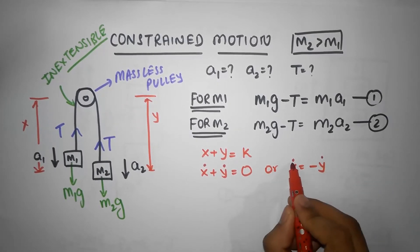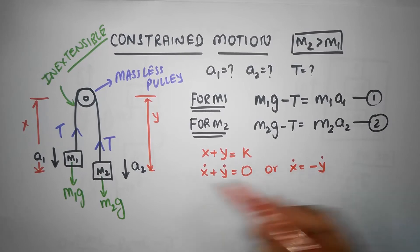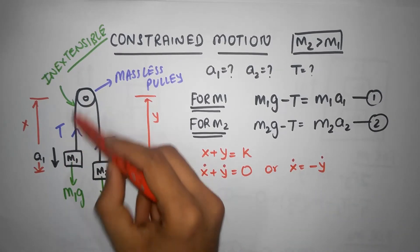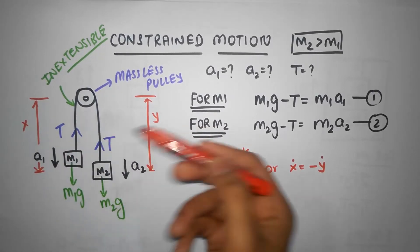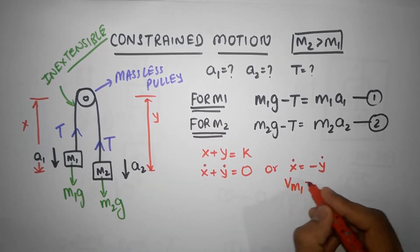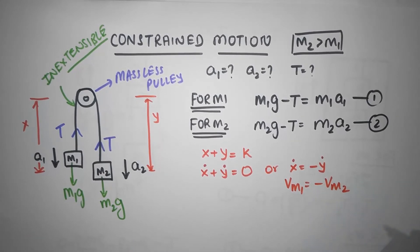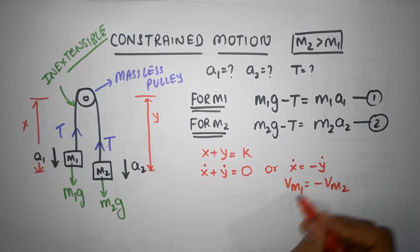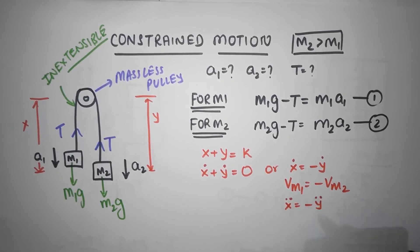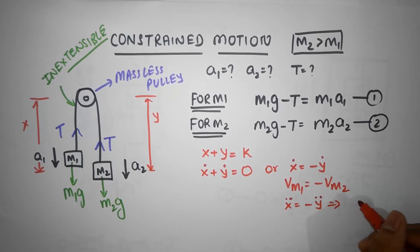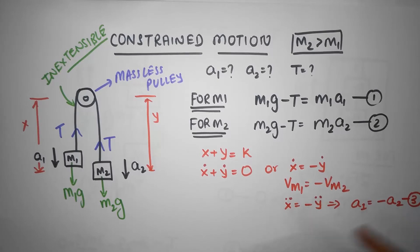x dot is the rate of change of position which is velocity of x. Velocity of this string must be in the opposite direction of the velocity of this string. Velocity of this string and the velocity of the mass are the same thing. So this is pretty much saying that velocity of m1 must be in the opposite direction of the velocity of m2. And I can double differentiate this. I can differentiate this again and I'll get x double dot equal to minus y double dot, which immediately implies that acceleration of the first block must be equal to minus the acceleration of the second block. And that's our equation number 3, that's the constraint equation that we were looking for.